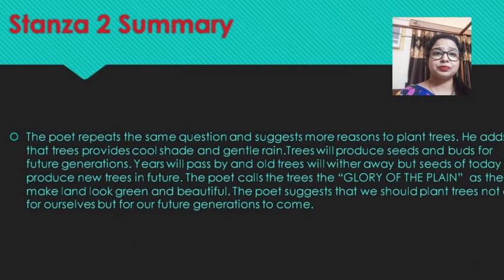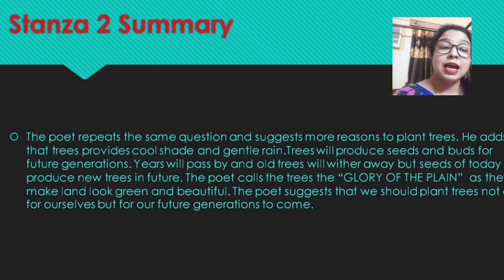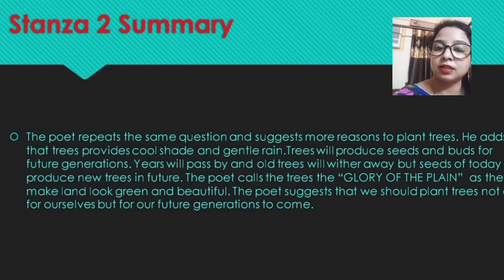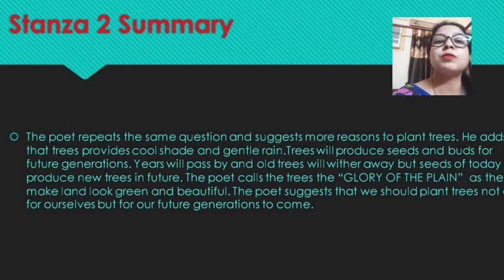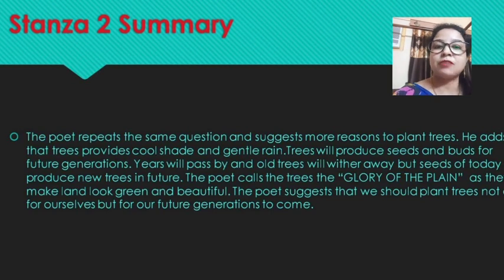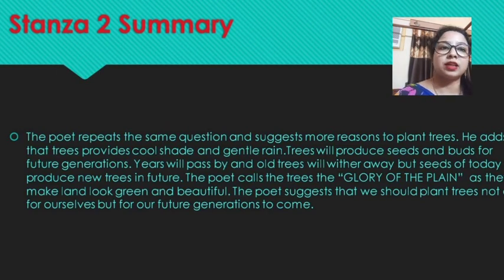Now let's move on to stanza 2. In the second stanza, the poet repeats the same question — why we should plant a tree — and suggests more reasons. He adds that trees provide cool shade, cool breeze, and are also responsible for gentle rain, which is essential for harvesting crops. Without rain we cannot harvest, and without food we would starve. So that is why the poet suggests we should plant more and more trees.